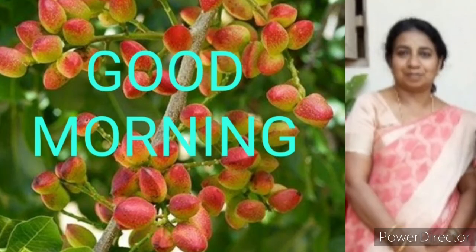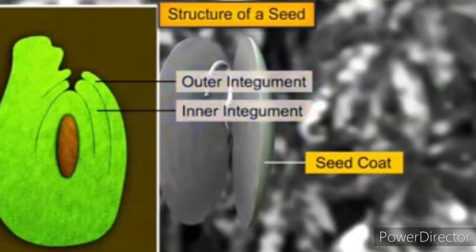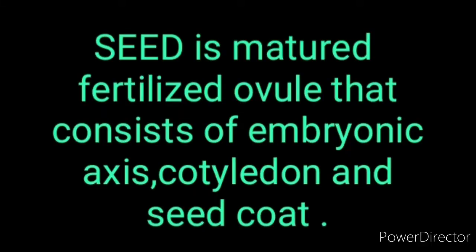Good morning children. Welcome back to biology class, chapter 2 part 9, sexual reproduction in flowering plants. Now we reach the end of the chapter, that is the seed. We will discuss about the seed. In angiosperms, seed is the final product of sexual reproduction. It is also called the fertilized ovule. Seeds are formed inside the fruits.